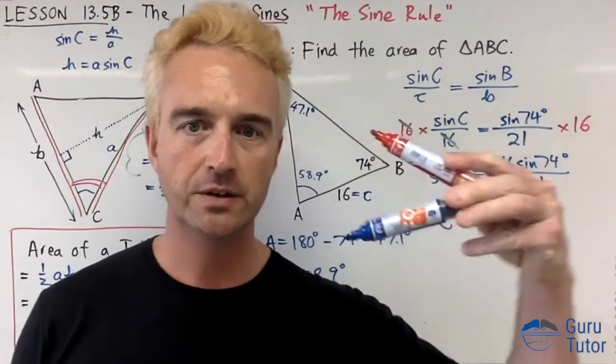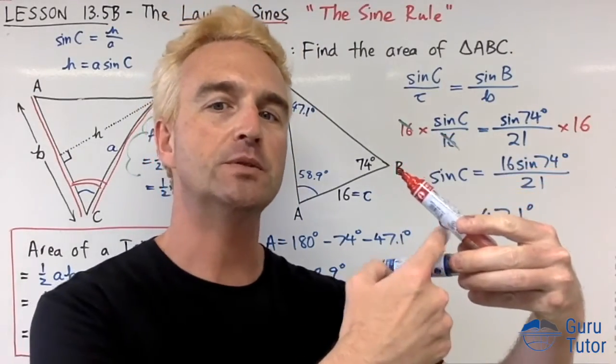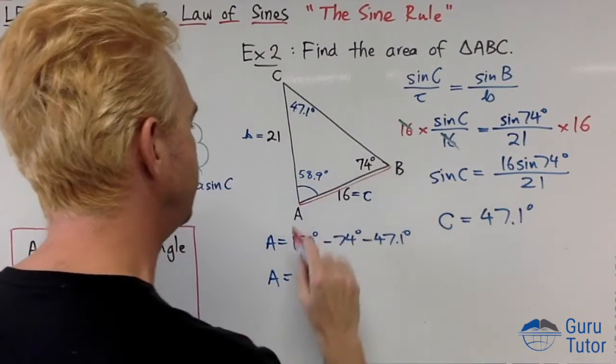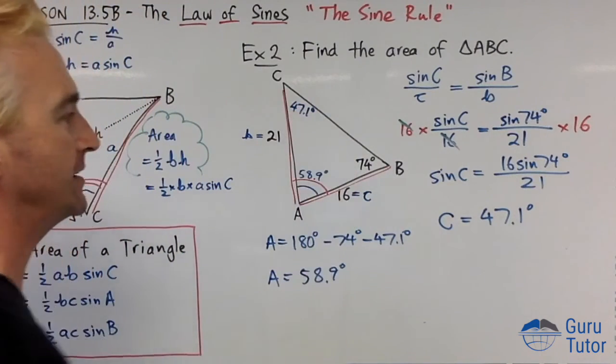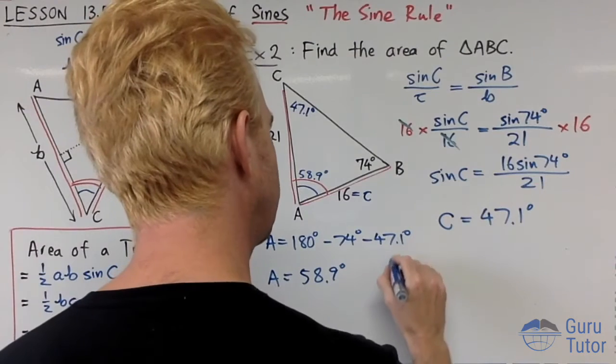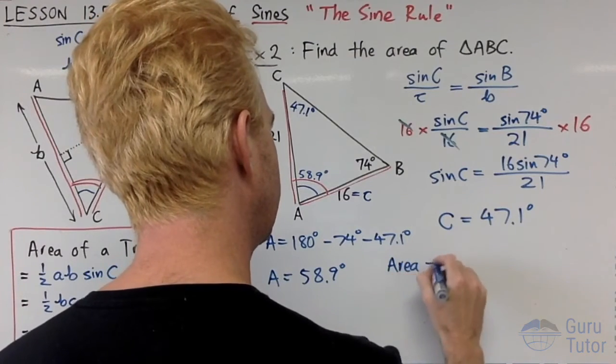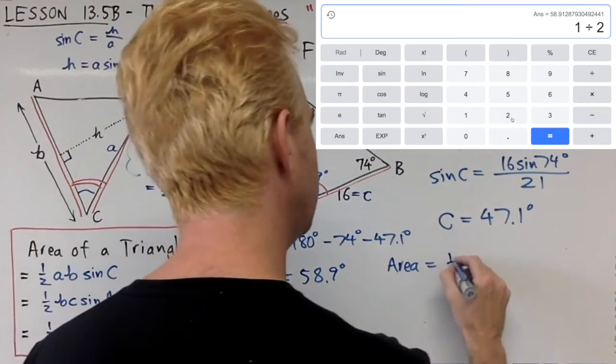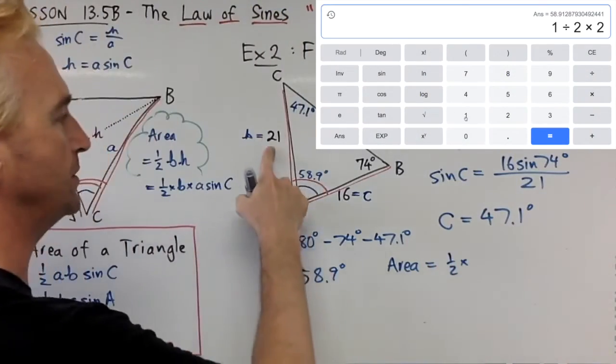Are we ready to find the area? Do we have the situation where we have two sides and the angle between them? Yes we do. We've got side 16, side 21, and the angle that makes those two sides. Area equals a half times the two sides, 21 times 16.